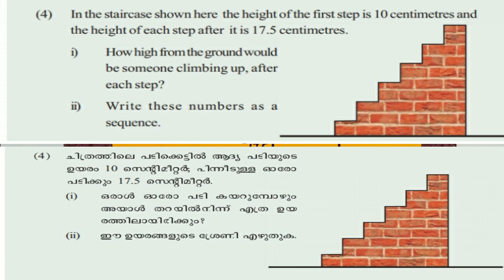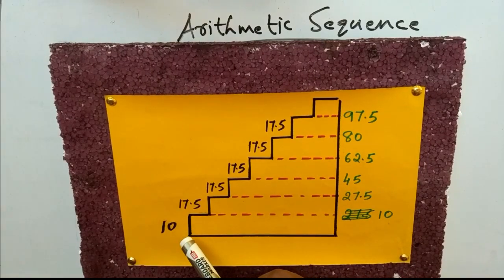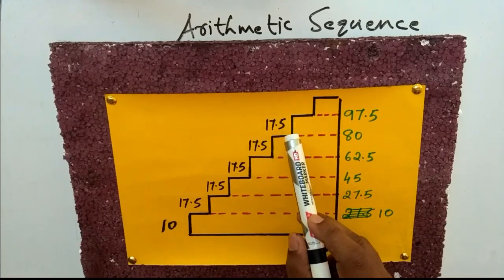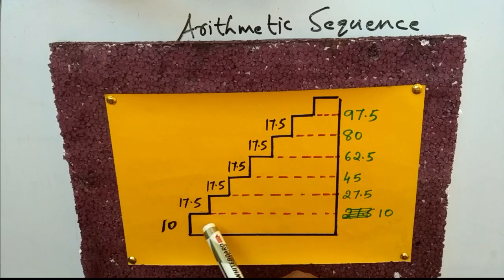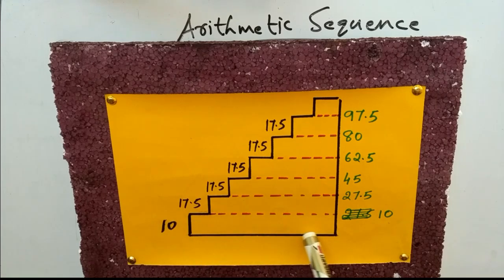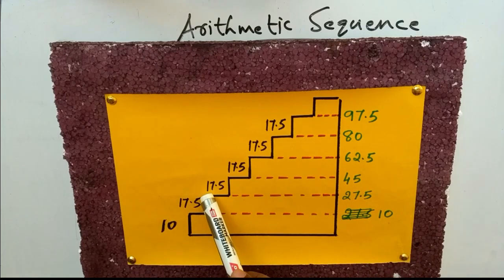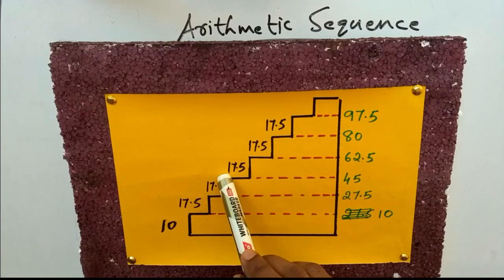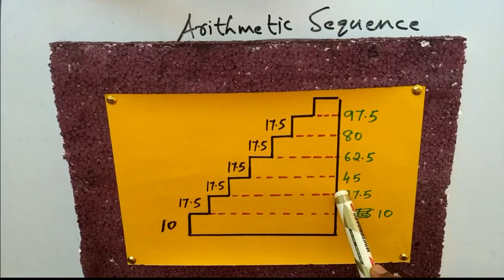This is a staircase. The first step is 10 centimetres and each subsequent step is 17.5 centimetres. The first step is the height of the ground level, so the height of the ground is 10 centimetres. This step is 17.5 extra, giving a level of 17.5 centimetres added to get the height.